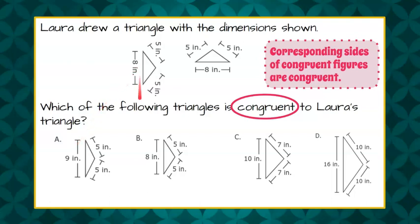So A cannot be it. We're looking at B. B is the only one of these triangles where the longest side is eight inches. And then I look and the other corresponding sides are five and five. So we know that the only triangle here of our choices that is congruent to Laura's triangle is choice B.